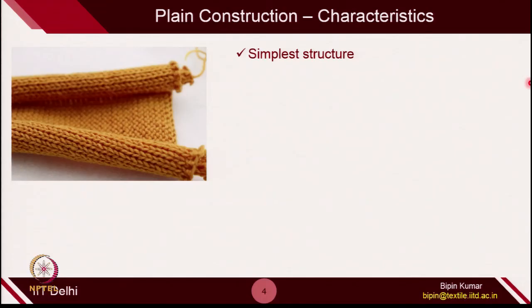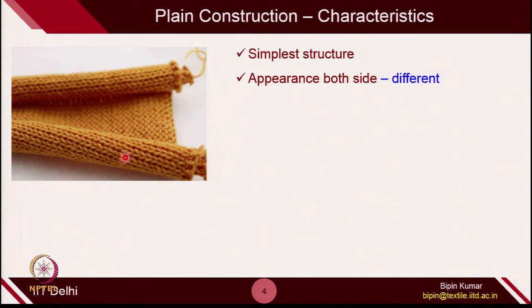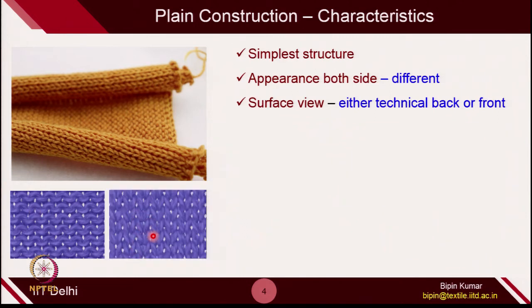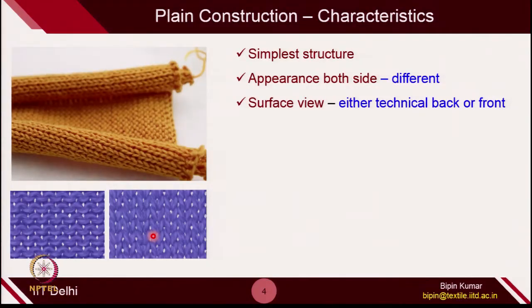The basic characteristic of single jersey is its simplicity — you are making either technical front or back loops depending on your machine. The appearance differs on both sides: on the technical back side you see the head and sinker loops, and on the technical front side you see the leg part. If you are making a t-shirt, the aesthetic changes depending on which side faces outward: the technical front shows vertical V-shaped legs, while the back side shows the curved head and sinker parts.